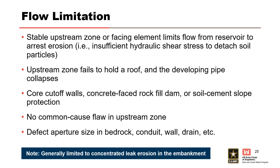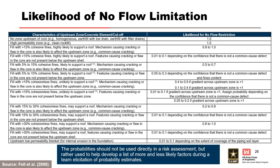Fell et al., 2008 provided some suggested guidance on assessing the likelihood that flow in a developing pipe will not be restricted by an upstream zone, a cutoff wall, or a concrete element in the internal erosion pathway. The likelihood that flow in a developing pipe will not be restricted by an upstream zone depends on key characteristics of the upstream material, including the percentage of fines, whether the fines are plastic or non-plastic, and the ability of the material to support a roof. The possibility that the mechanism causing cracking or a flaw in the core may also affect the upstream zone—for example, common cause cracking—must be considered. For internal migration into conduits or open rock defects, flows are mainly limited by the size or aperture of the open defect.